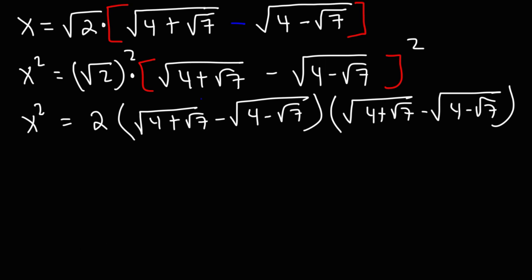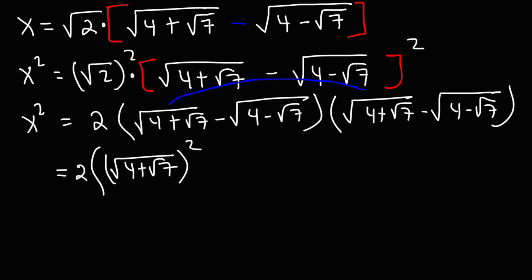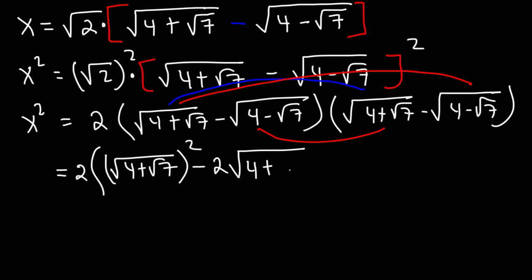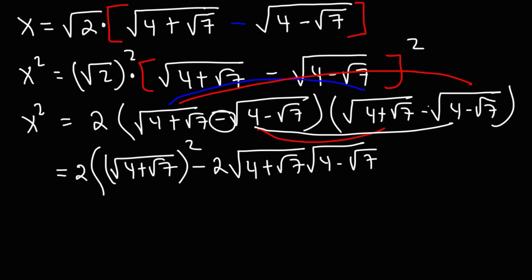Now let's FOIL. The square root of 4 plus the square root of 7 times itself can be written as (√4 + √7) squared. Then the square root of 4 plus the square root of 7 times negative square root of 4 minus the square root of 7 — since we have two of these cross terms, it's going to be negative 2 times (√4 + √7)(√4 − √7). Finally, the last two terms: we have two negative signs, so that becomes positive (√4 − √7) squared.